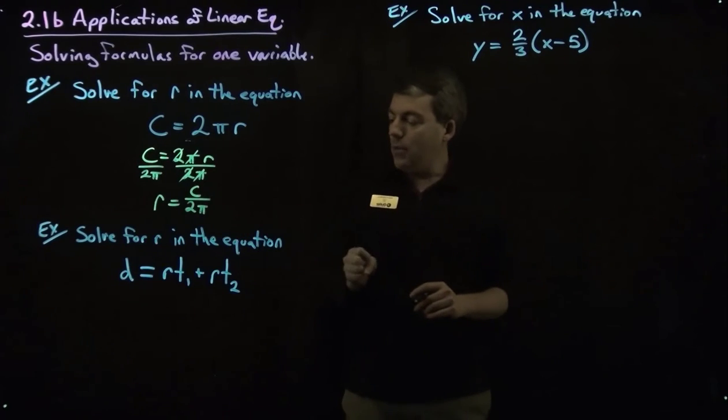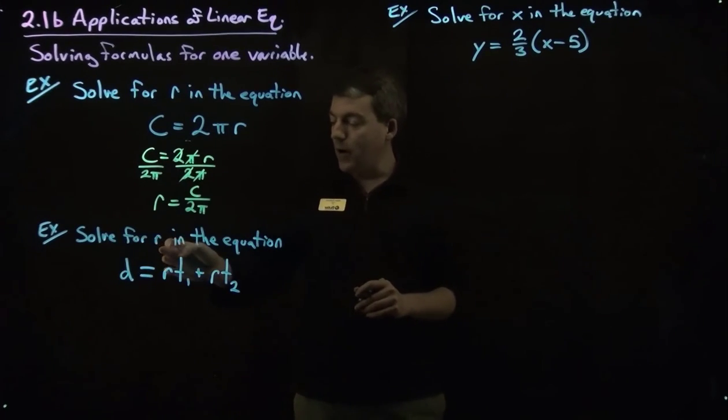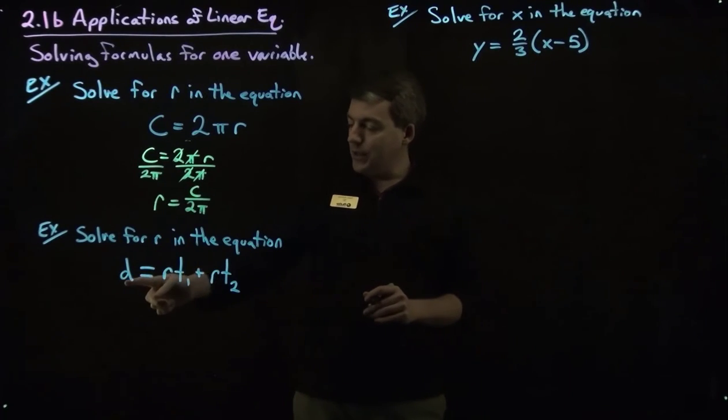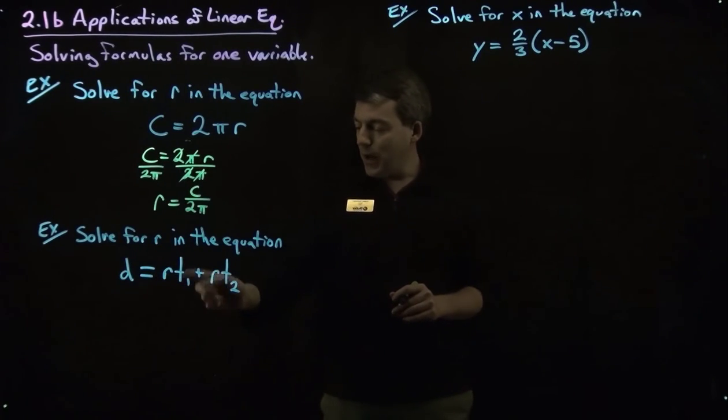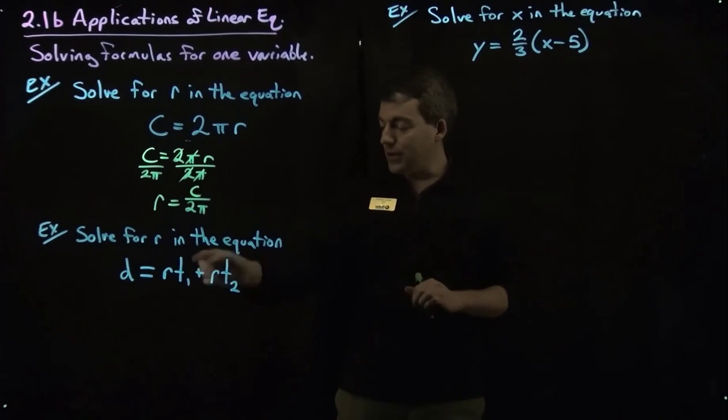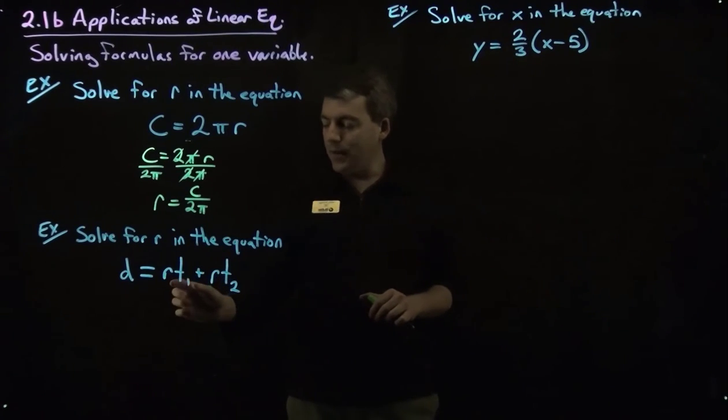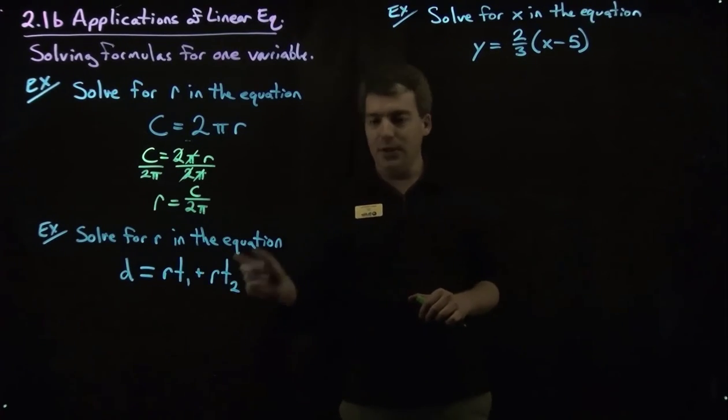Okay great, let's look at the next problem here. We want to solve again for r in the equation d equals r t1 plus r t2. One thing to note here is that these 1's and 2's are, they're not part of the equation other than to identify that these two t's are different.